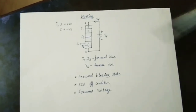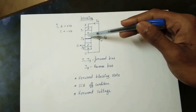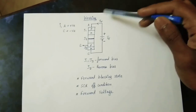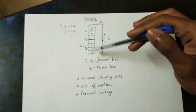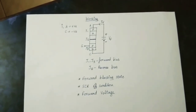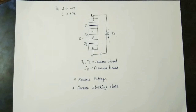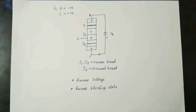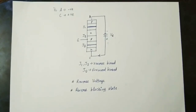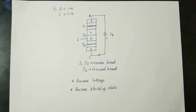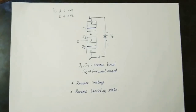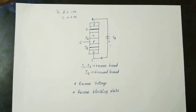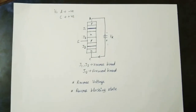If you have to break the supply or break the capacity, you have to break the current flow. The second condition is reverse: anode negative and cathode positive. In this case, J1 and J3 are reverse biased, and J2 is forward biased. If you have reverse voltage, this is the reverse blocking state — the device is blocked.